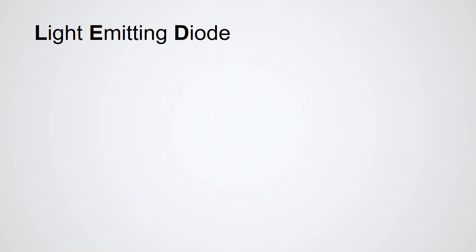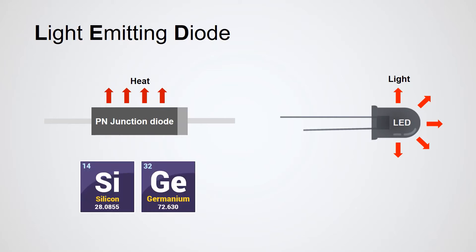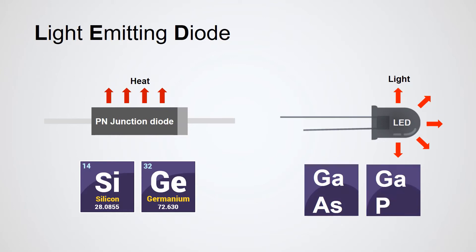An LED operates on the same principle as that of a general-purpose diode, except that a general-purpose or rectifier diode releases energy in the form of heat, while an LED releases energy in the form of light. This is because an LED is made from compound semiconductor materials like gallium arsenide, gallium phosphide, and other semiconductor materials that emit light.